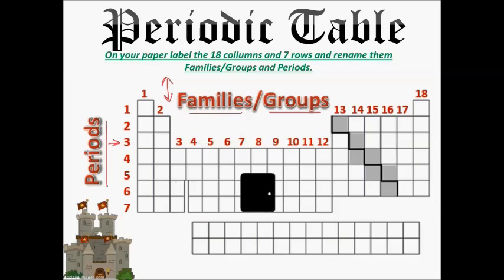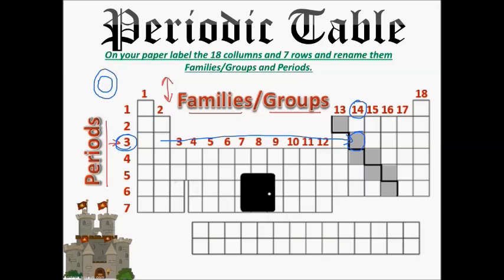When we talk about an element's address, we might say an element is in family 14, period 3 — and that specific location tells you exactly which element it is. Families are grouped by the same number of valence electrons. Periods are arranged because elements have the same number of energy levels or rings on their Bohr model — so an element with two rings belongs on the second period.